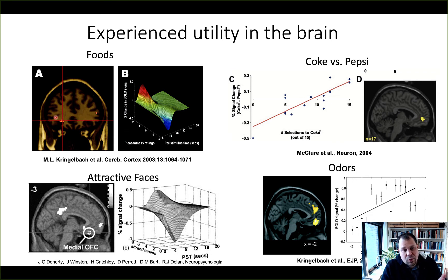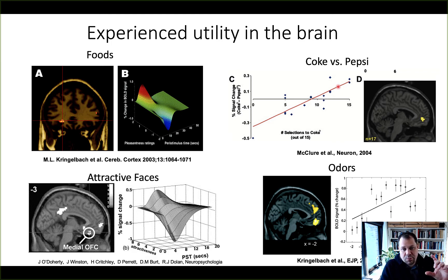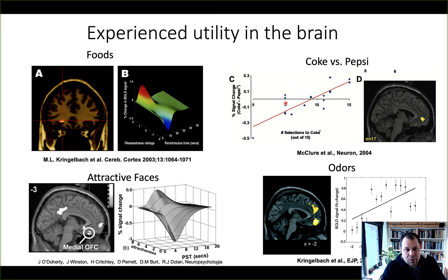This is an experience-related utility signal. Similarly, there's the famous McClure study in Neuron in 2004, where the authors looked at preferences for Coke versus Pepsi. On the x-axis is the behavioral selection of Coke relative to Pepsi, with 15 being the maximum. Participants didn't know which brand they were choosing — the brand was hidden. On the y-axis is percent signal change for drinking Coke versus Pepsi — this is the experienced utility signal for one brand versus another.